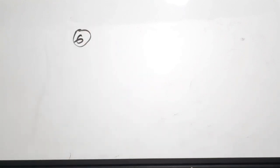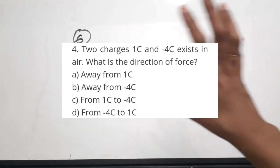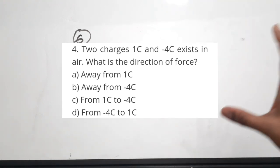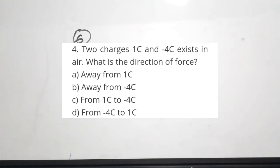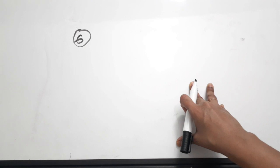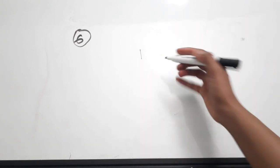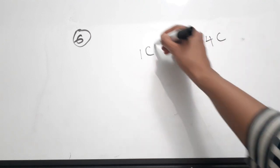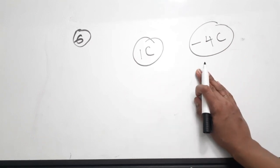Sixth question is from Coulomb's law. Two charges — one coulomb and minus four coulombs — exist in air. What is the direction of force between them? Since one charge is positive and the other is negative, they are of opposite polarity. Unlike charges attract while like charges repel — so these two charges will attract each other.